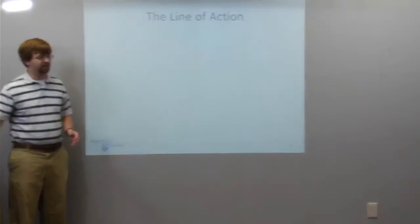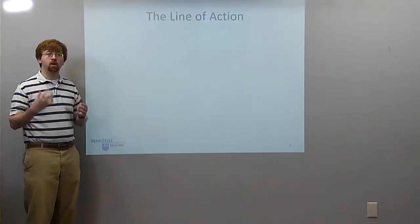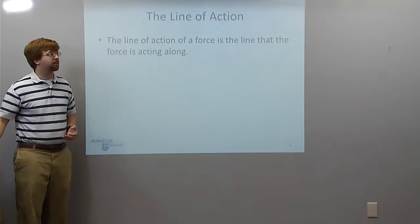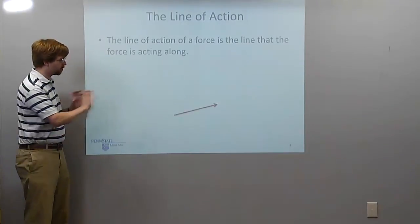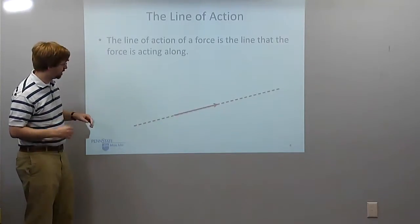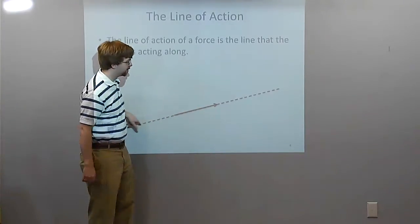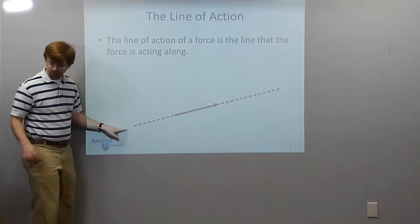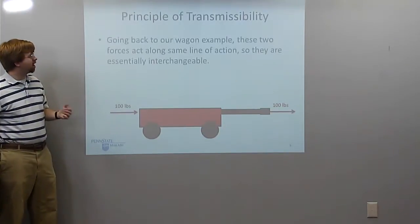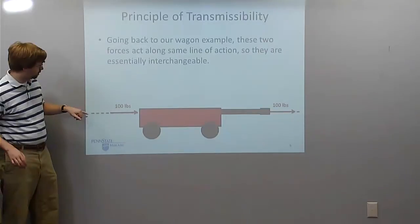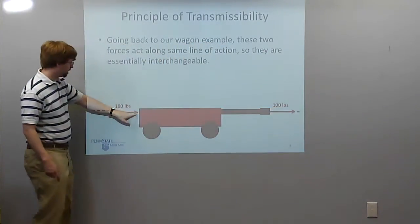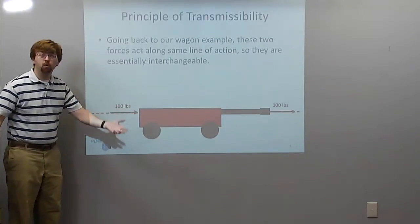The line of action is the other important part. The force can be moved anywhere along the line of action. The line of action is the line that the force vector is acting along. If I've got some force vector, the line of action would be the line that goes through that, and it doesn't have to be on the vector itself — I can move it anywhere up and down this line. Going back to my little red wagon, these two are interchangeable because the line of action is the same. I can move the front force back because I'm moving along the line of action.